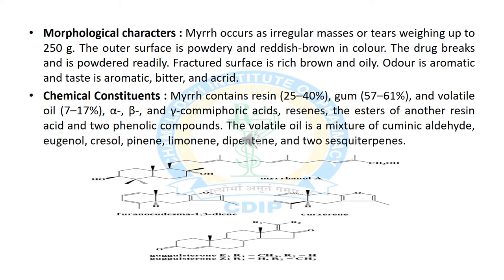Now we will discuss the morphological characters of Myrrh. It is found in irregular or tear shape, reddish brown in color, with an aromatic odor and bitter acrid taste. The chemical constituents include resin, gum and volatile oil. Other compounds are commiphoric acid, resins and esters of resin acids and other phenolic compounds. The volatile oil contains a mixture of cuminic aldehyde, eugenol, chrysinol, pinene, limonene, etc.